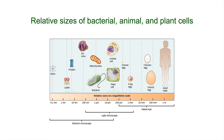Looking at relative sizes — prokaryotic bacterial cells are fairly small, in the one micrometer range. Some cocci are about half a micrometer in diameter. Some bacteria are much larger; the spirulina we looked at in the lab is around 40 micrometers in length. On average, prokaryotic bacterial cells are much smaller than animal and plant cells. We can see them with our light microscope, certainly with an electron microscope, but probably not with the naked eye.